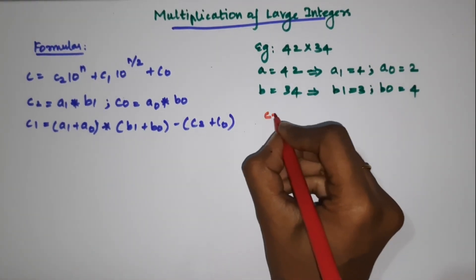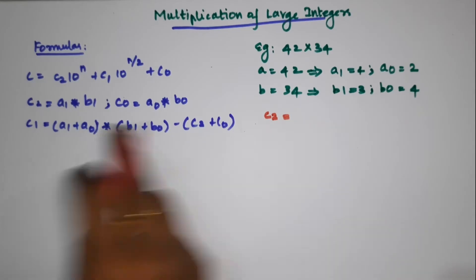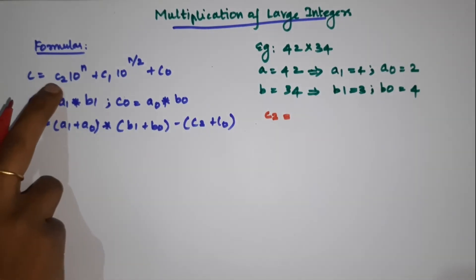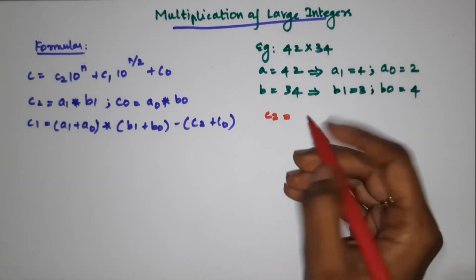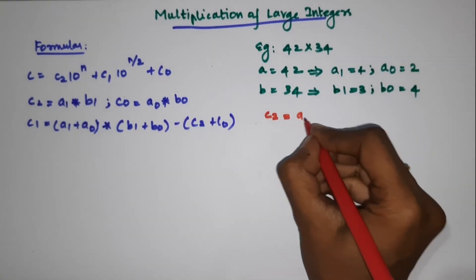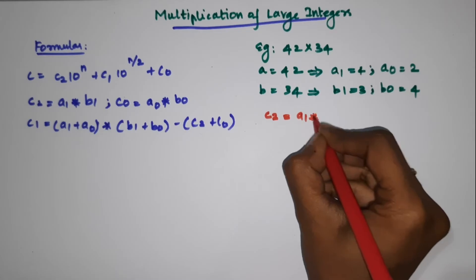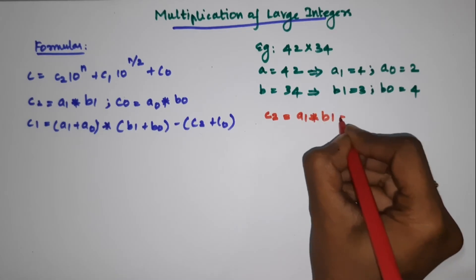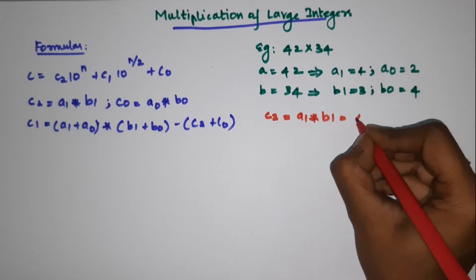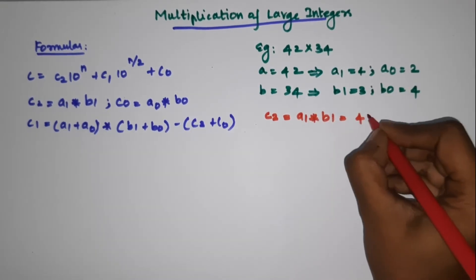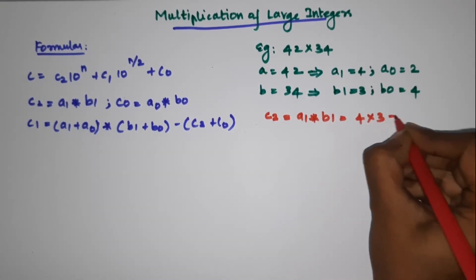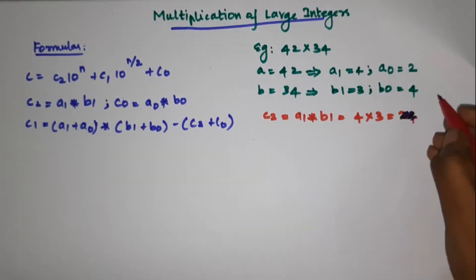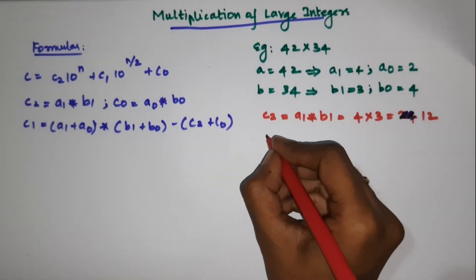Now we will compute C2 first. C2 is equal to A1 star B1. A1's value is 4, and B1's value is 3, so 4 times 3 gives us 12. C2 equals 12.